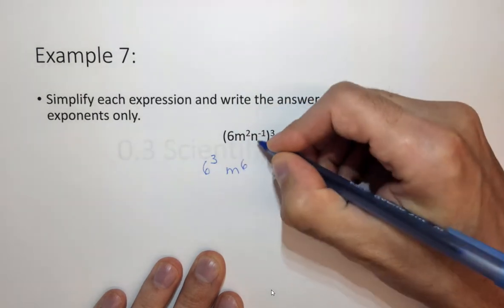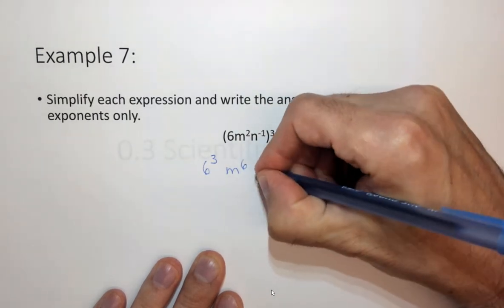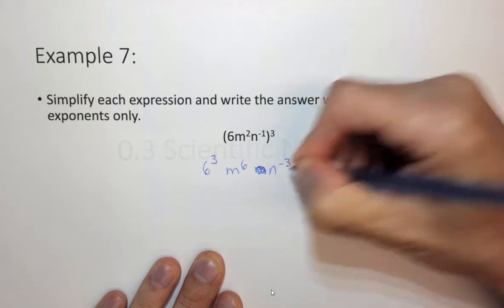m to the sixth, and n to the minus 1 cubed which is n to the minus 3.